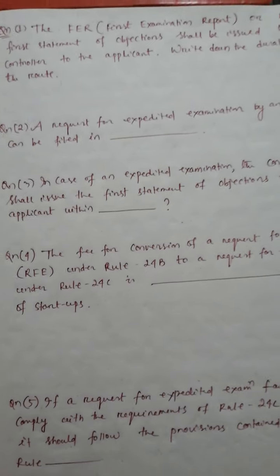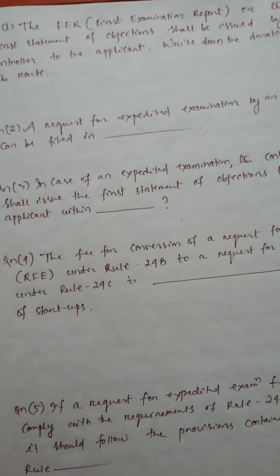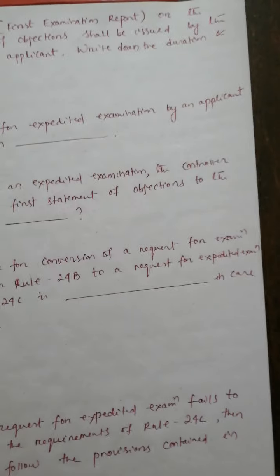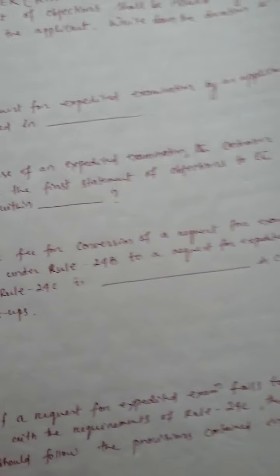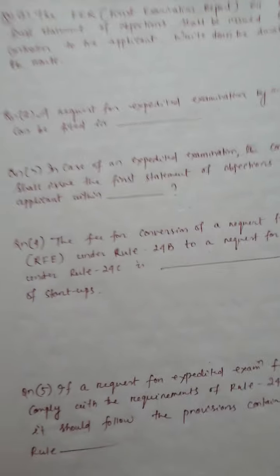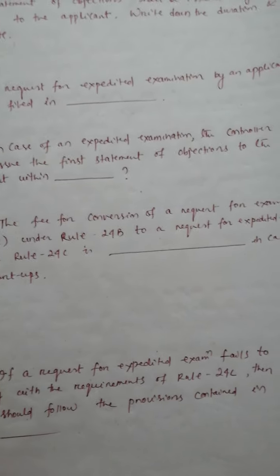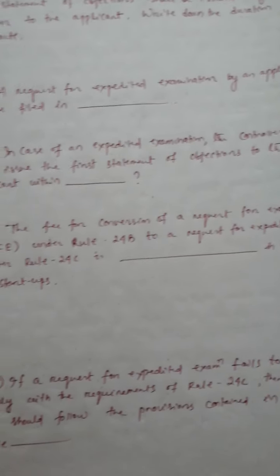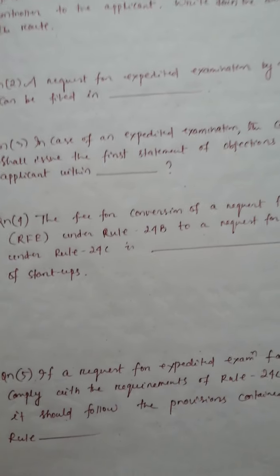Question number 4: The fee for conversion of a request for examination or RFE under Rule 24B to a request for expedited examination under Rule 24C is blank in case of start-ups. Question number 5: If a request for expedited examination fails to comply with the requirements of Rule 24C, then it should follow the provisions contained in Rule blank.